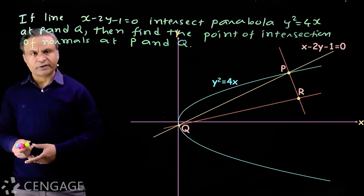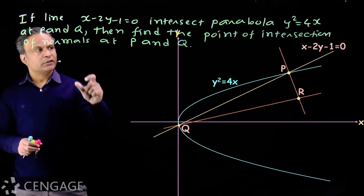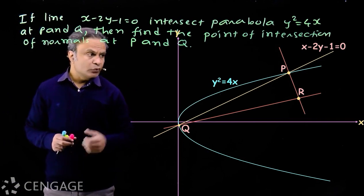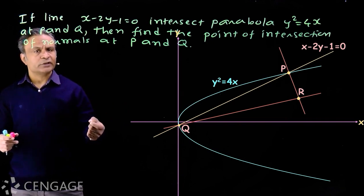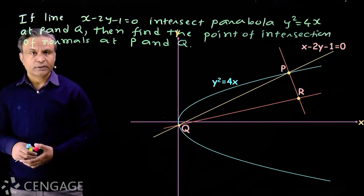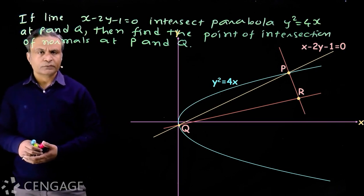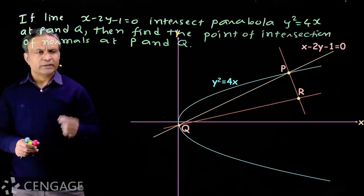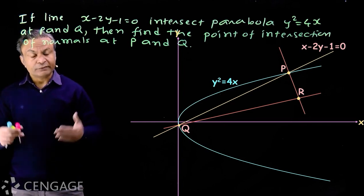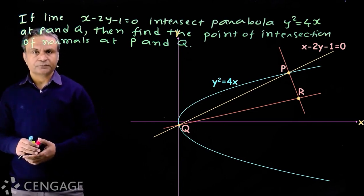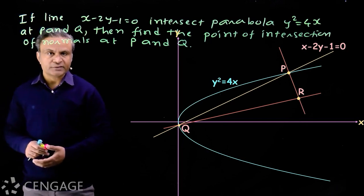One simple approach is to solve the line and parabola to find the coordinates of P and Q. After getting the coordinates, we can find the equations of the normals using the standard equation in parameter t or by calculus/differentiation method. Then we solve those two equations of normals. This approach is simple conceptually, but not from a calculations point of view.